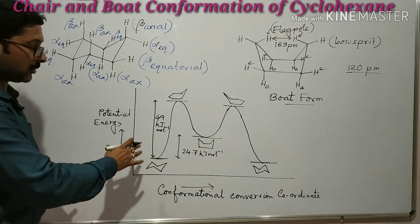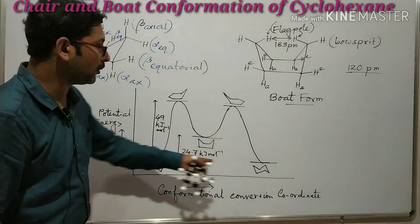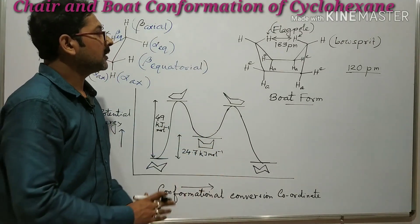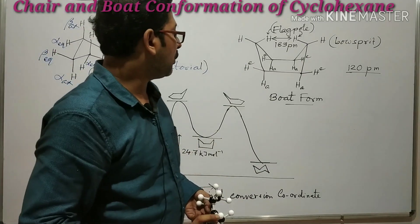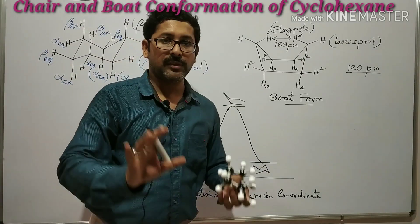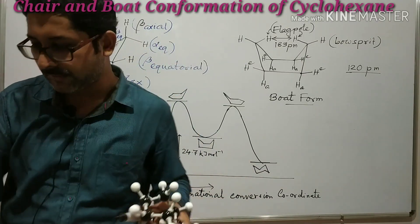So the boat conformation is less stable than the chair conformation by approximately 26.7 kJ/mol — some books list it as 24.7 kJ/mol, so the range is roughly 24–28 kJ/mol. The chair conformation is the most stable form of cyclohexane. This is the achiral pathway of conversion from one chair form to another. Thanks a lot for watching.